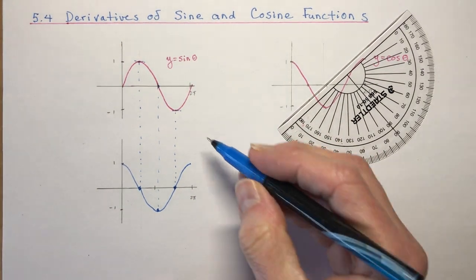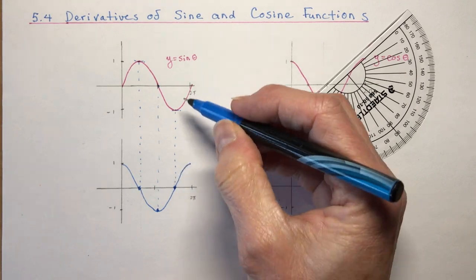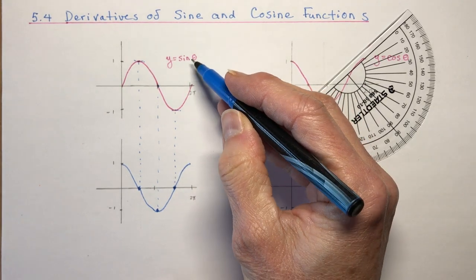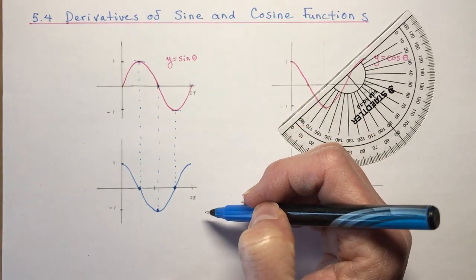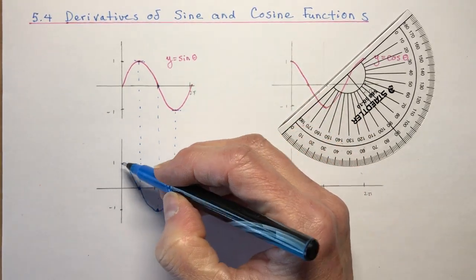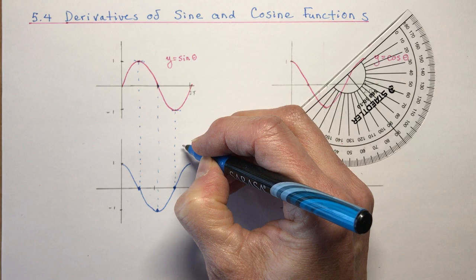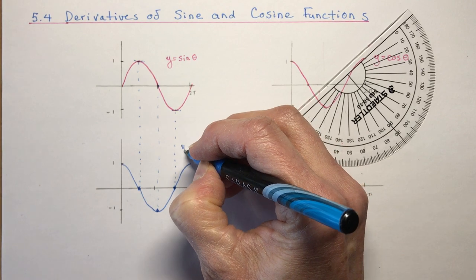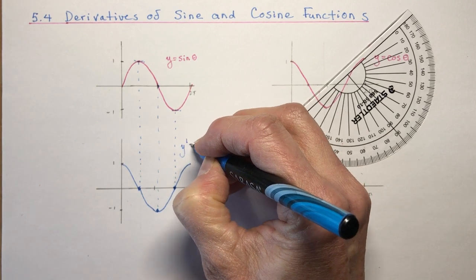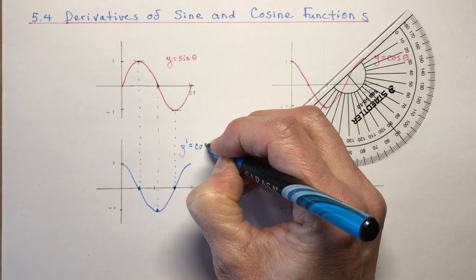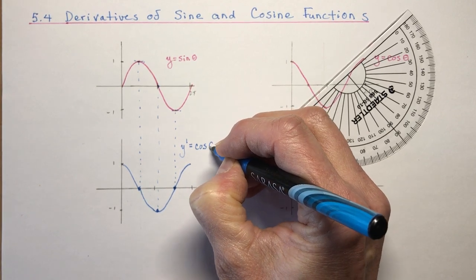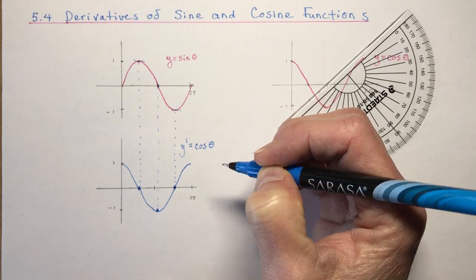So I think you can tell me what is the derivative of sine theta. y prime equals the cosine function - cos theta.